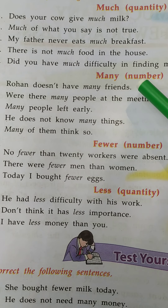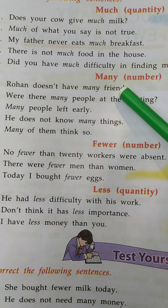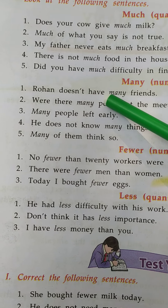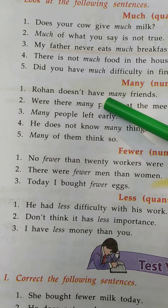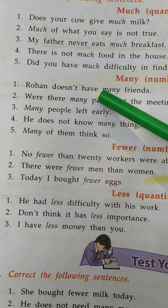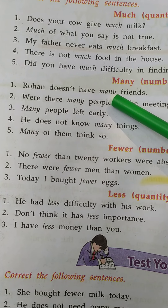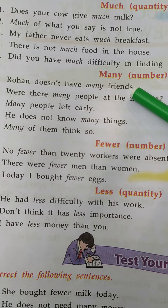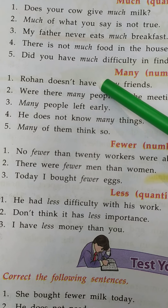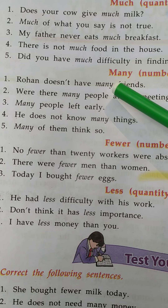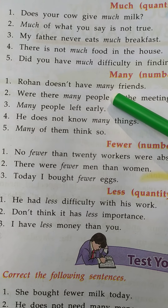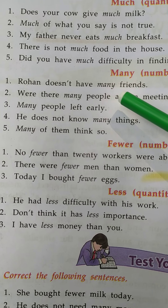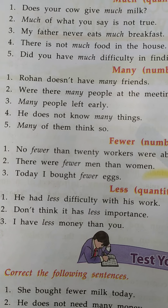Many is also a determiner that denotes number. For example: 'Rohan does not have many friends.' In this sentence, many is the determiner that is used with the plural noun 'friends' and the plural verb 'have.' The determiner many refers to the number of the noun 'friends.'